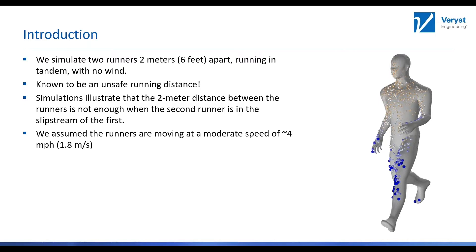I put this figure here — even though it's a spoiler — and it shows where the particles are going to land on the rear runner. The bigger particles are in blue, and exaggerated in size, they will land on the legs. Smaller particles in lighter color and smaller size are going to land on the torso and the hands. So clearly, that's not a safe configuration.